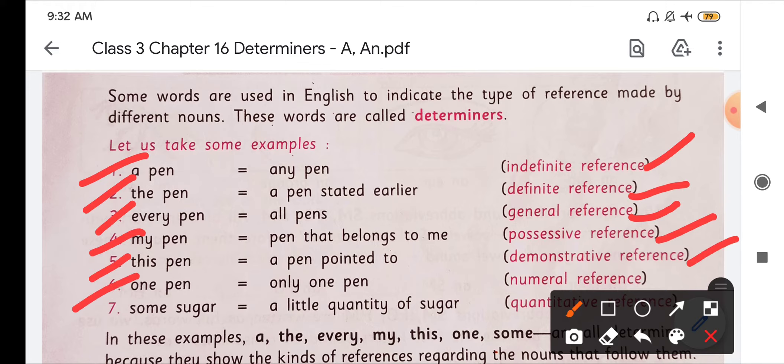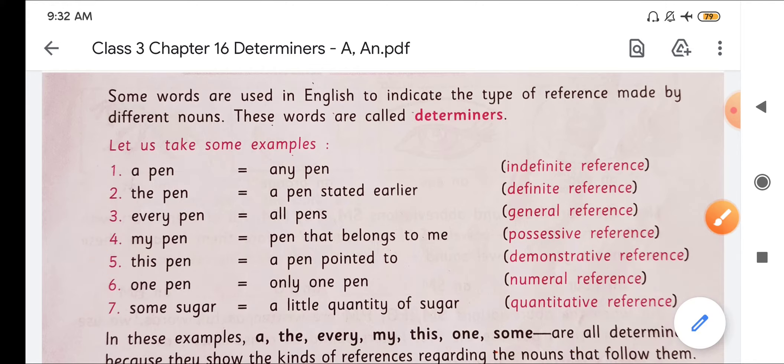One pen, only one pen, that is numerical. That means we know the number of it, one pen. Then some sugar, a little quantity of sugar, that is quantitative reference.